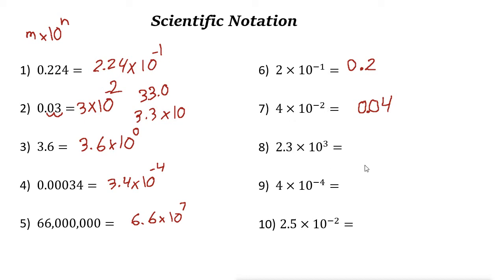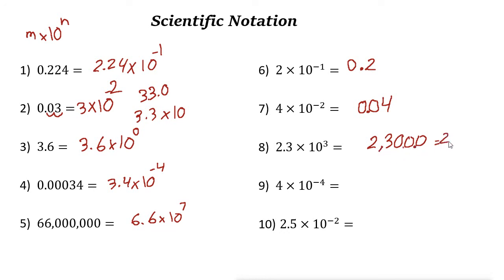For 2.3 times 10 to the power of 3: the power is positive, so write 2.3 and add zeros as needed — 2.30 is the same value. The power is 3, so move the decimal point 3 places to the right: 1, 2, 3. The decimal point moves here, giving two thousand three hundred — 2300 is the answer.